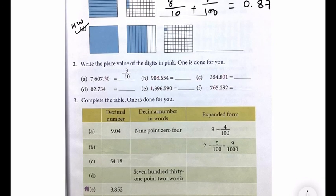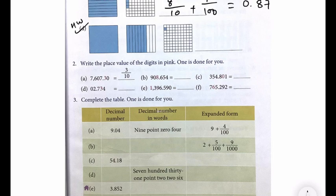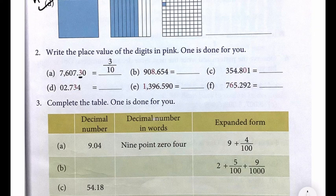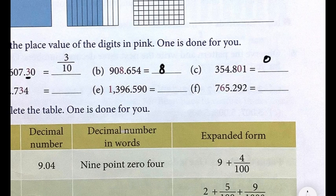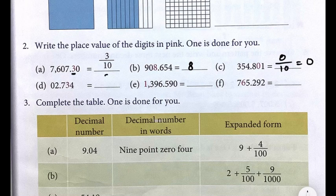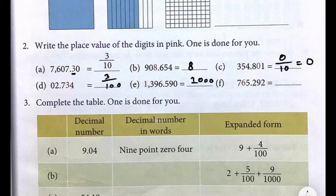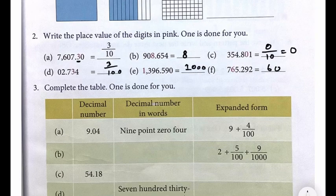Now let's solve question number 2: write the place value of digits in pink. Here you see 3 was in tenths place and 8 is in ones place. Next question: zero is in hundredths place — I have written it mistakenly, I will correct in the PDF. Three is in hundredths place, one is in thousands place, and six is in tens place.